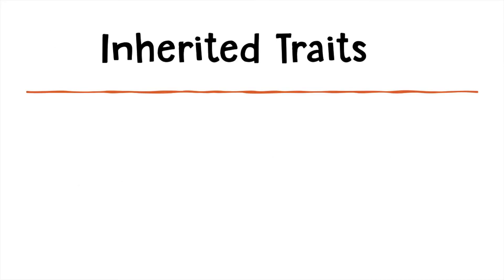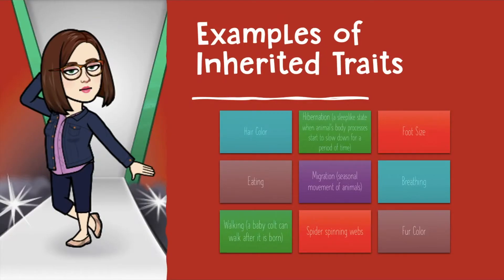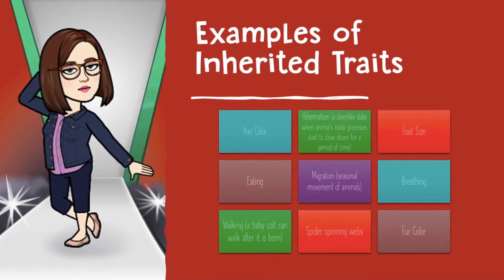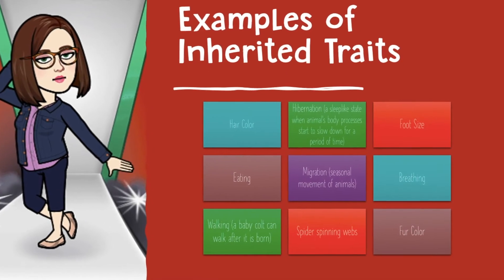Inherited traits are traits that are given to you by mom and dad through your genes. Genes are DNA information that is contained in each of your cells. Some examples of inherited traits include your hair color, hibernation, your foot size, eating, migration, breathing, and walking.